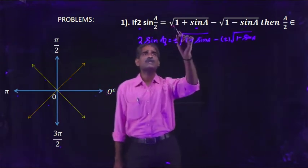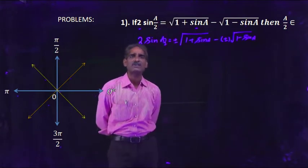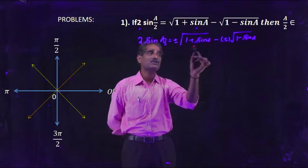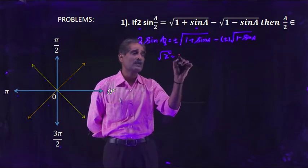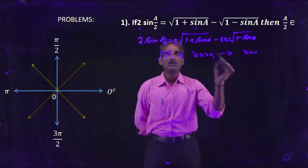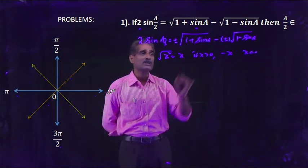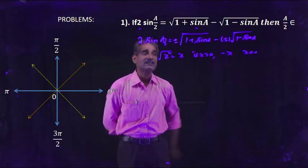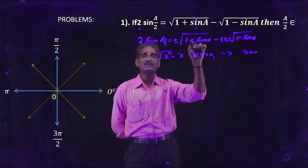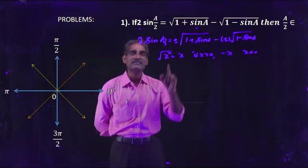We are given that 2sin(a/2) equals √(1+sinA) minus √(1-sinA). Since both left-hand sides are equal, we compare the right-hand sides. The first term here is √(1+sinA), and in our formula the plus or minus gives √(1+sinA). We know √(x²) equals x when x is positive and -x when x is negative. Since the first term matches as positive, it means cos(a/2) + sin(a/2), i.e., c+s, is positive.